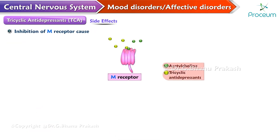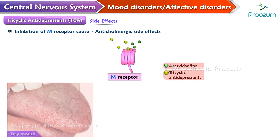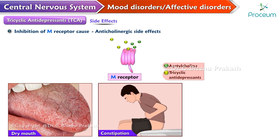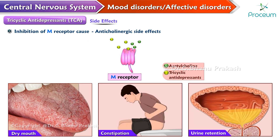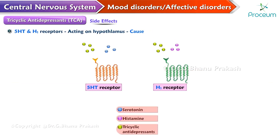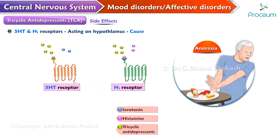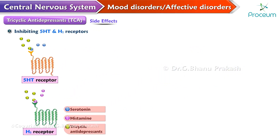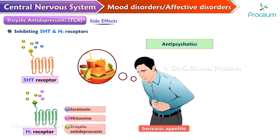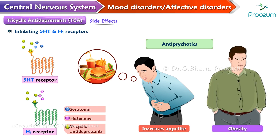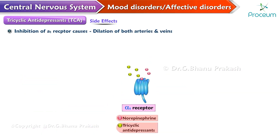The inhibition of histamine and muscarinic receptors causes sedation; hence TCAs are also used in the treatment of insomnia. The inhibition of muscarinic receptors causes anticholinergic side effects like dry mouth, constipation, urinary retention, and so on. Serotonin and histamine, by acting on the hypothalamus, cause anorexia; hence by inhibiting the H1 and serotonin receptors, these drugs increase appetite and cause obesity. The alpha-1 block causes dilation of both arteries and veins and hence carries a risk of postural hypotension.